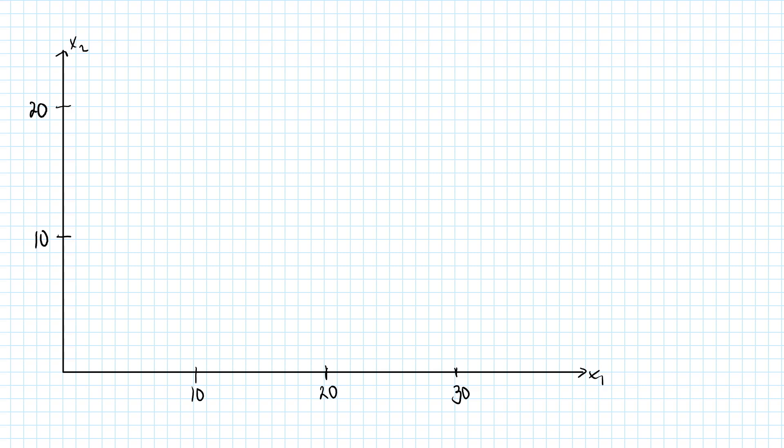Most types of preferences can be represented by a utility function. Let's have a look at a simple case when we have two goods and they are perfect substitutes. Let's begin with the case when the consumer is willing to substitute them in a 1-to-1 ratio. The consumer now only cares about the total quantity she has of good 1 and good 2, and not at all whether this quantity is composed mostly of good 1 or mostly of good 2.